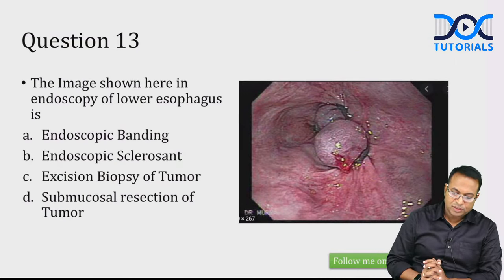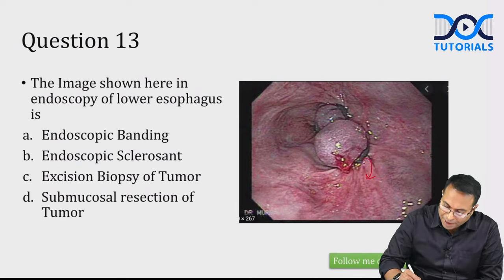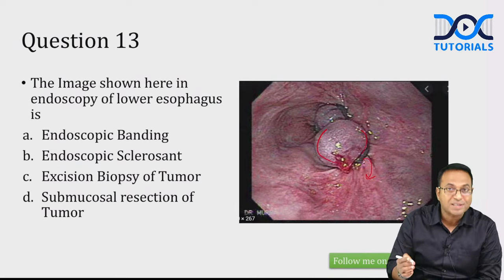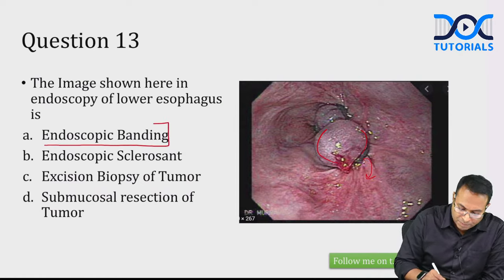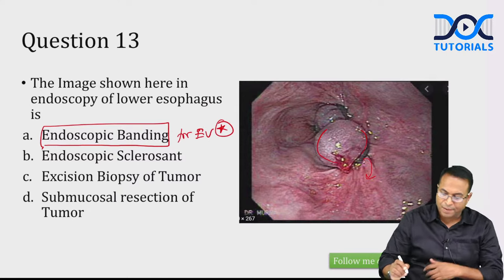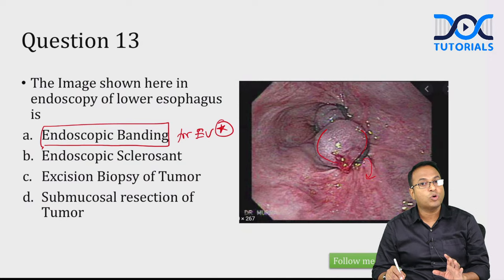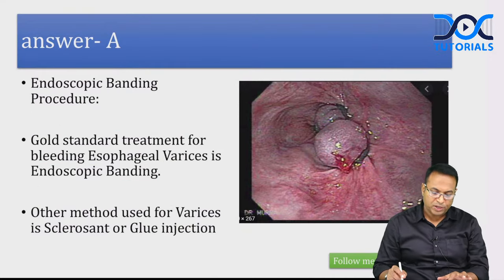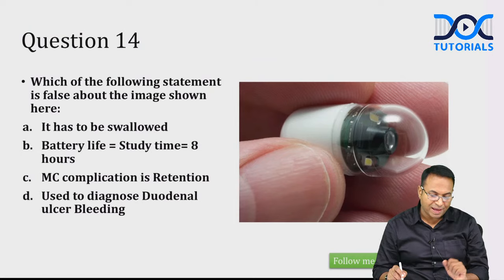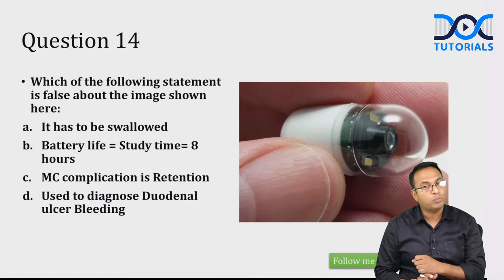The next endoscopy image shows a black band with something bulging — this is endoscopic banding for bleeding esophageal varices. We place a band known as endoscopic band ligation (EBL) for esophageal varices.